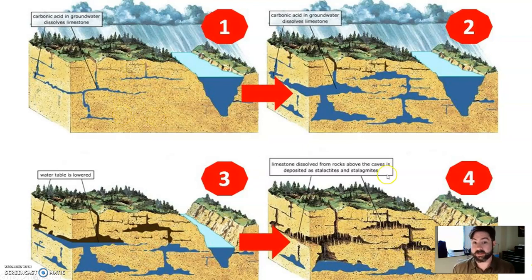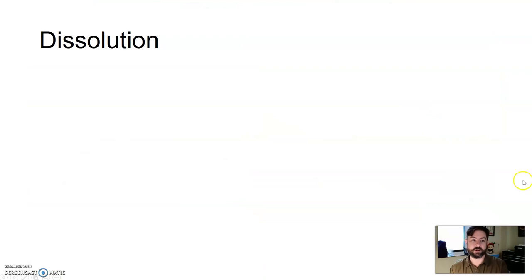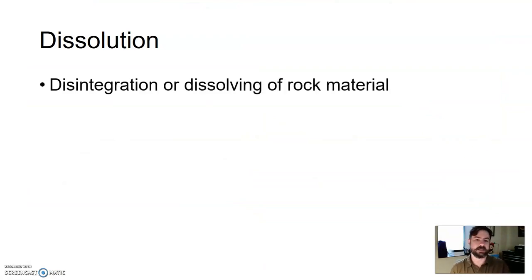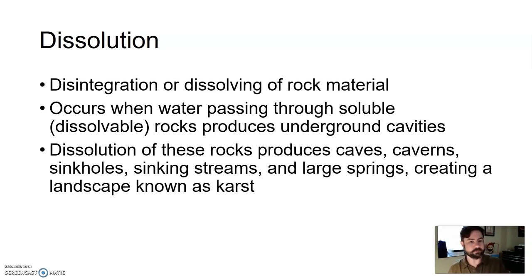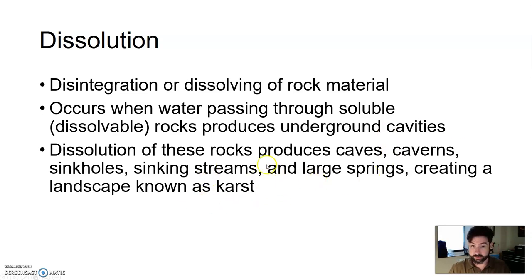That process of slightly acidic groundwater eating away and dissolving limestone is called dissolution. The dissolving of rock material occurs when slightly acidic rainwater passes through soluble, dissolvable rocks, producing cavities. You can produce caves, caverns, sinkholes, sinking streams, large springs — a number of different things — all collectively known as karst.